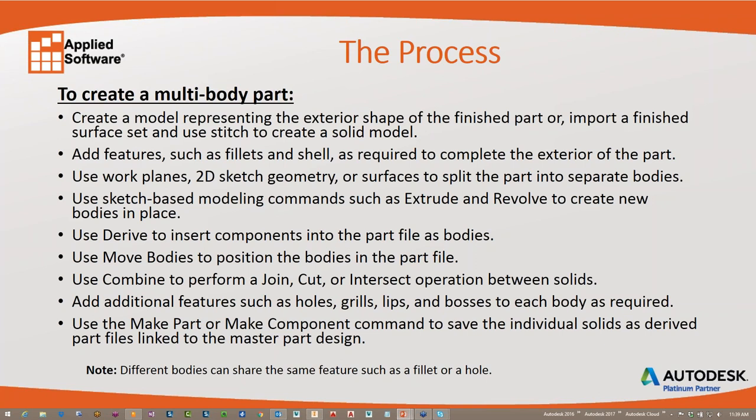You can also derive parts or other components into the file as bodies. You're able to use the Move Bodies command to position bodies in the part file, and also use Combine to perform a join, cut, or intersect between solids. You can continue to add additional features such as holes, grills, lips, and bosses. Finally, when all the modeling is done, you use the Make Part or Make Component command to save the individual solids as derived part files linked to the master file.